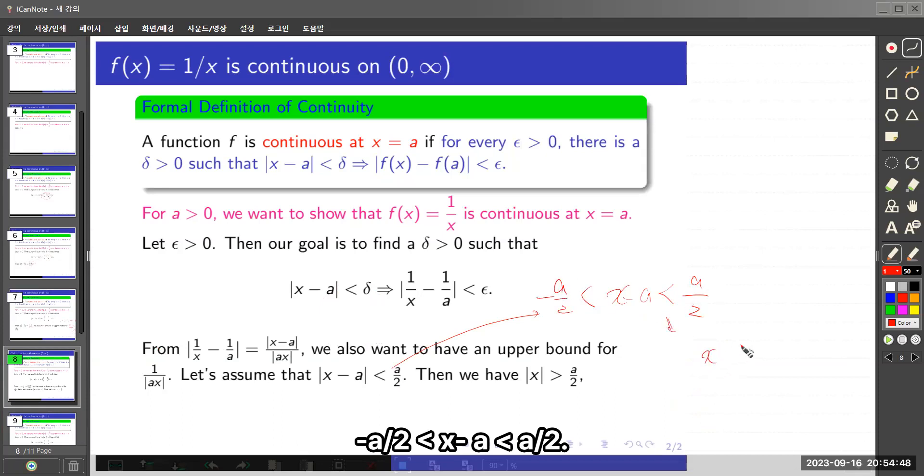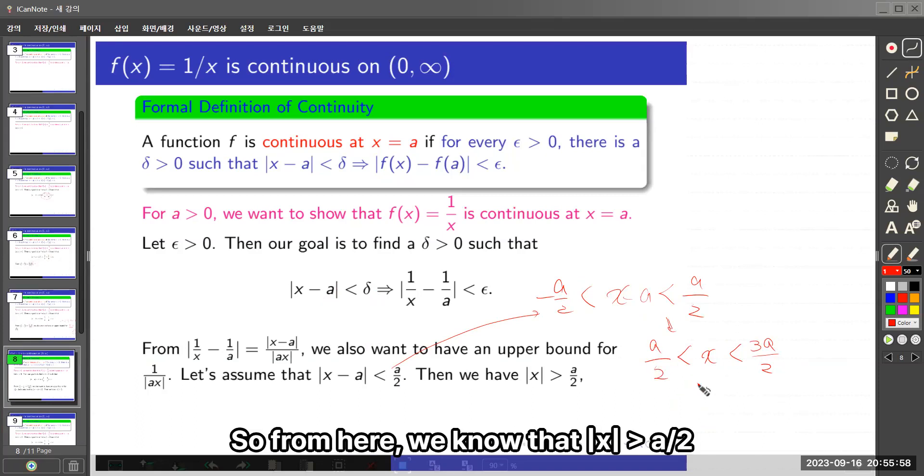|x - a| less than a/2 and bigger than -a/2. So x is less than 3a/2 and bigger than a/2 in here. So from here,